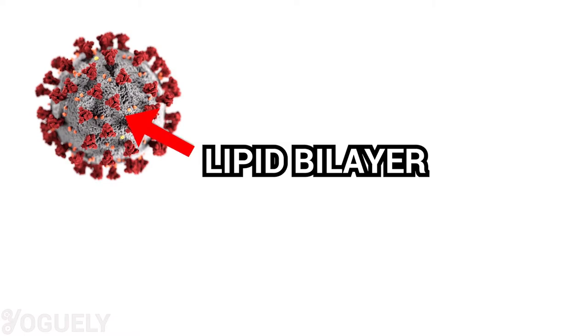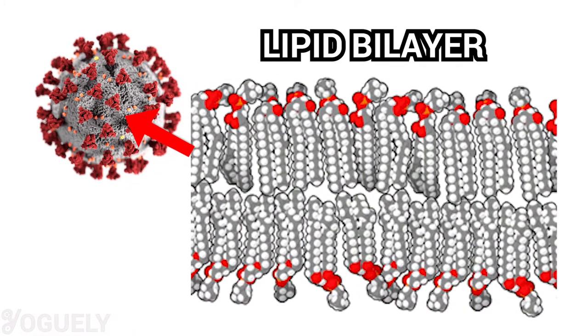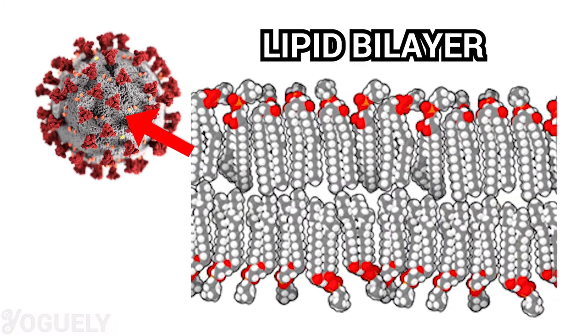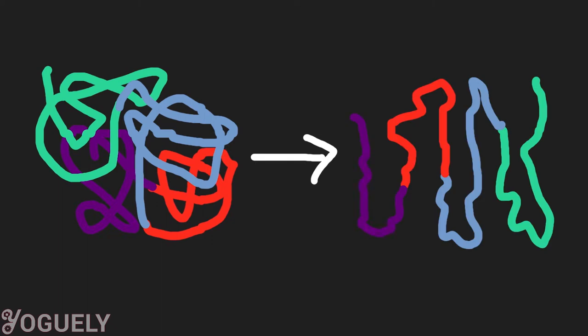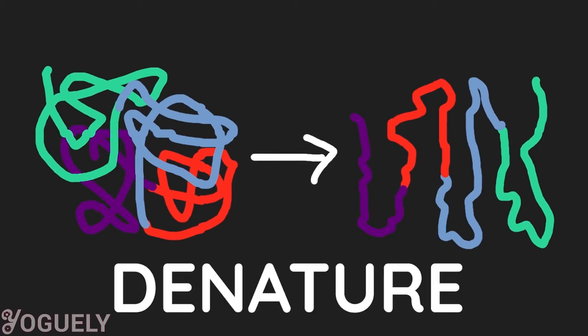How do soap and detergent kill viruses and bacteria? Surfactants, like those in soap and detergent, kill microorganisms by disorganizing their membrane lipid bilayer. The lipid bilayer is what makes up the cell membrane of almost all life forms. Therefore, surfactants break down the cell membrane of organisms and many viruses. Surfactants also unfold the proteins of microorganisms, solubilizing and destructuring them so they are no longer in the right shape to function. This process is called denaturation.